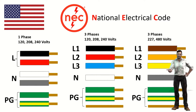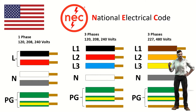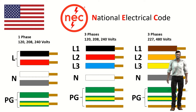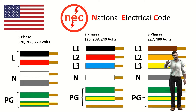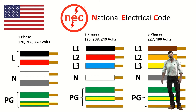For three-phase installations of 120, 208 or 240 volts, also used in the residential and office environment, the following colors are normally used: black for line 1 (L1), red for line 2 (L2), blue for line 3 (L3), and white for the neutral (N). For the protection cable or ground cable we have the color green, green with a yellow stripe, or the bare wire.